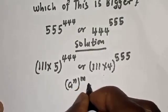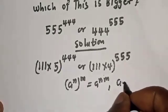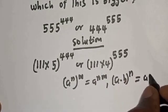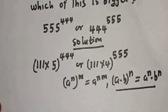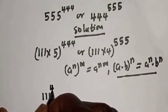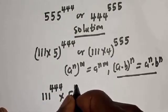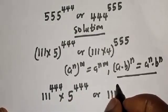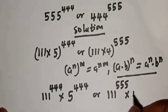The rule that (a raised to power n) raised to power m equals a raised to power n×m. Also, (a multiplied by b) raised to power n equals a raised to power n, multiplied by b raised to power n. Using these rules, we get: 111 raised to power 444, multiplied by 5 raised to power 444, versus 111 raised to power 555, multiplied by 4 raised to power 555.